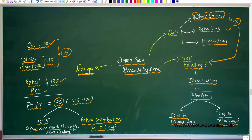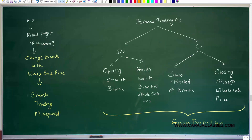It means only the remaining 10 is the actual contribution of the branch. The actual contribution of the branch is only 10, and that we have to understand. To know what is the actual contribution of the branches, organizations will adopt the wholesale branch system. In the wholesale branch system, the head office will find out the retail profit of the branch by charging the branch with wholesale price, and for this they will open something called a branch trading account followed by a P&L.